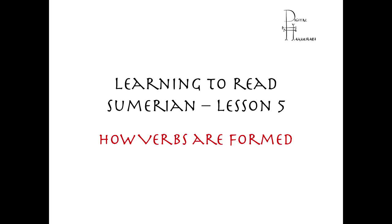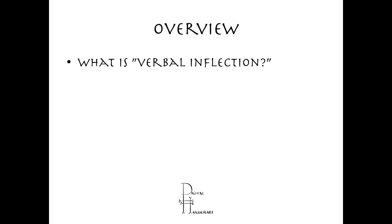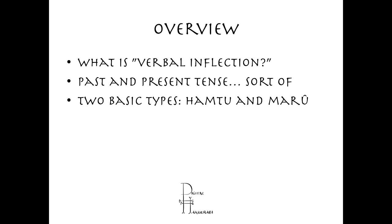Welcome back everyone to Learning to Read Sumerian, Lesson 5. Today we're going to be talking about how verbs are formed. We'll look at what verbal inflection is, what the difference is between the past and present tense, and should we even be using these terms. And then finally, looking at the two basic types of verbs in Sumerian: they are classified as hamtu and maru.